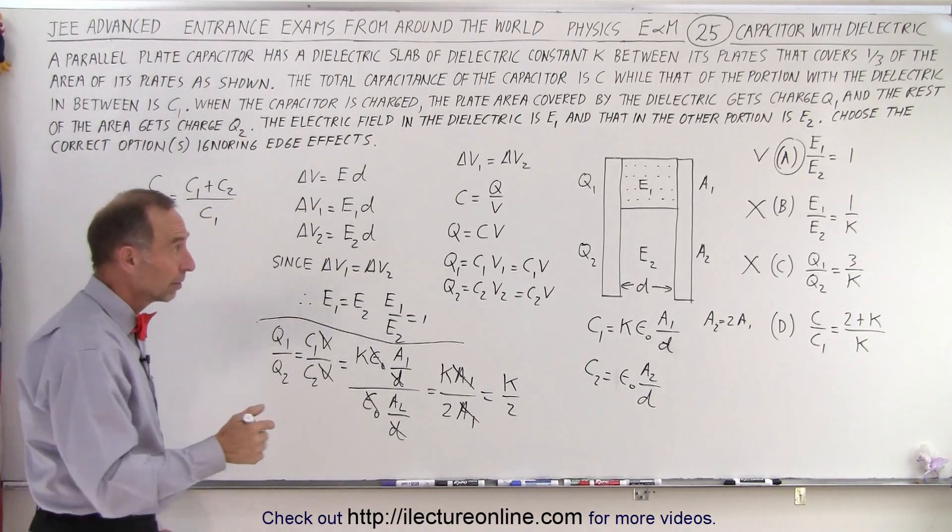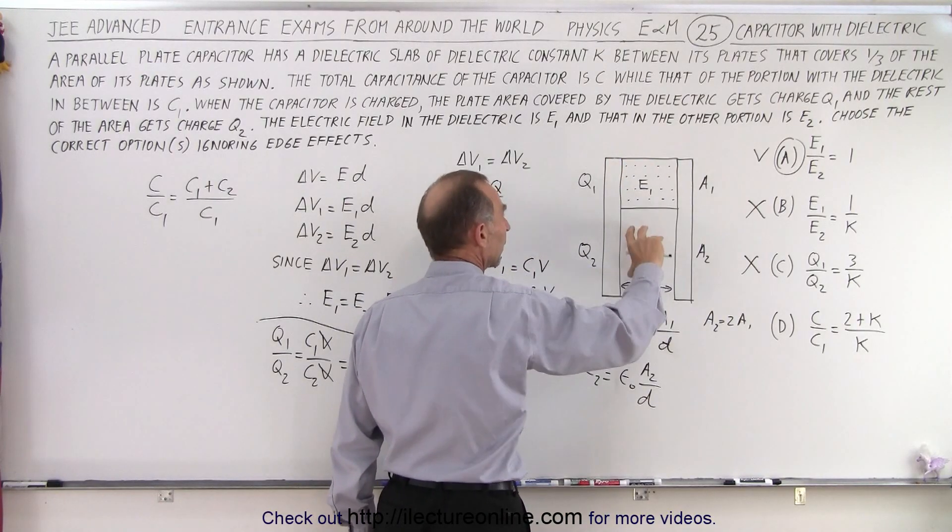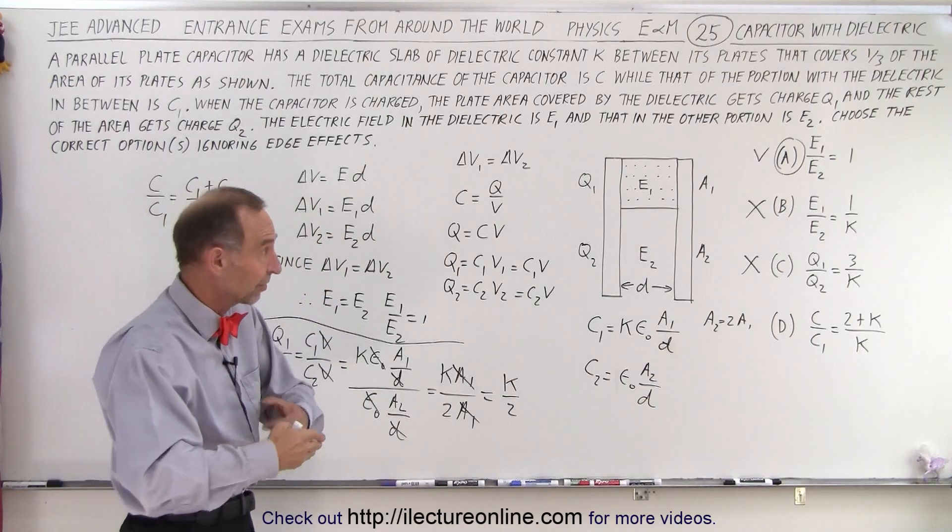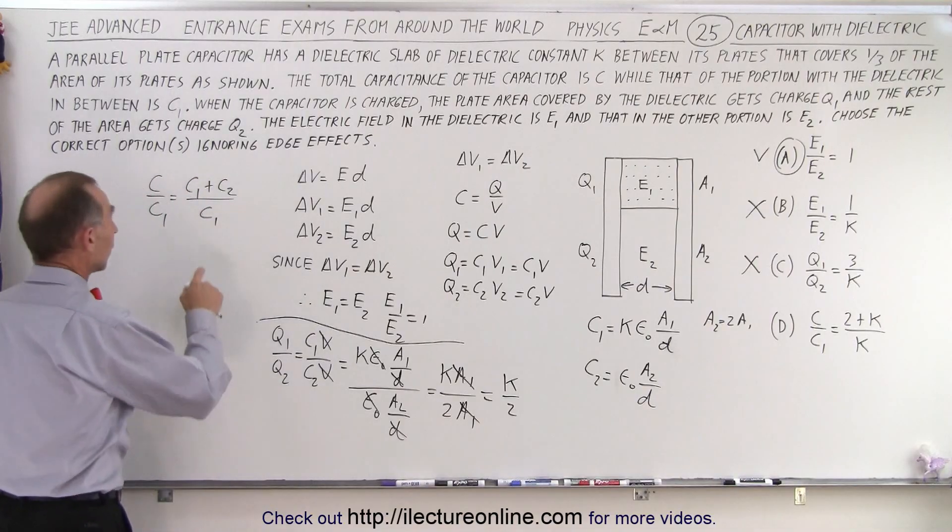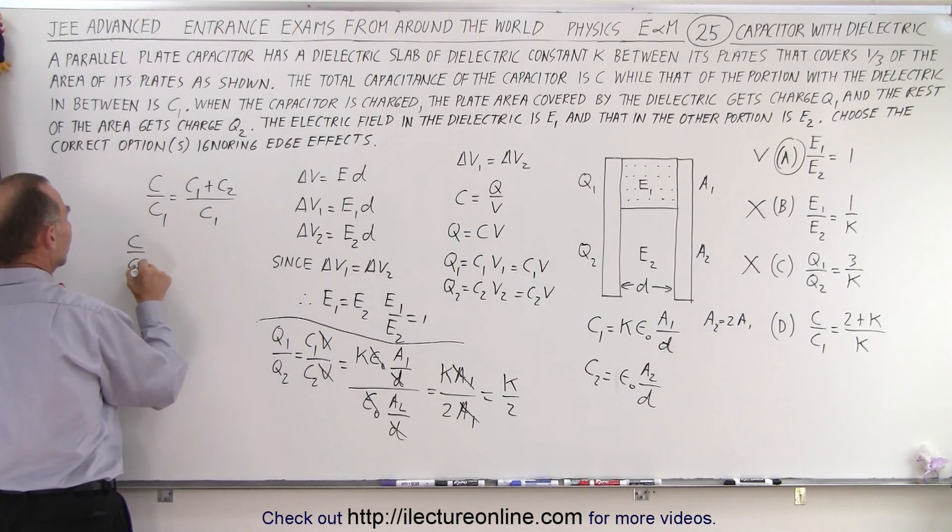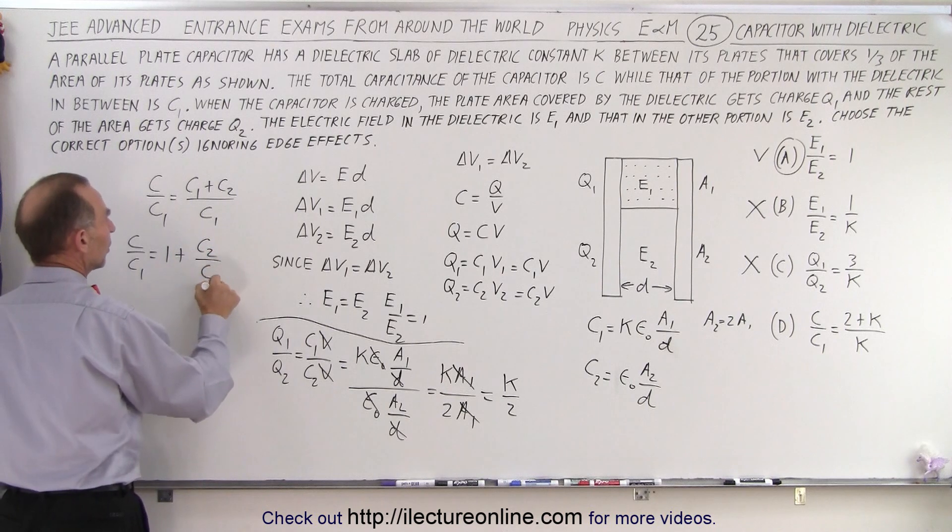because these can be considered as two capacitors that are in parallel, and of course capacitors in parallel can simply be added up. Then we divide C1 into the numerator, so we know that C divided by C1 is equal to 1 plus C2 over C1.